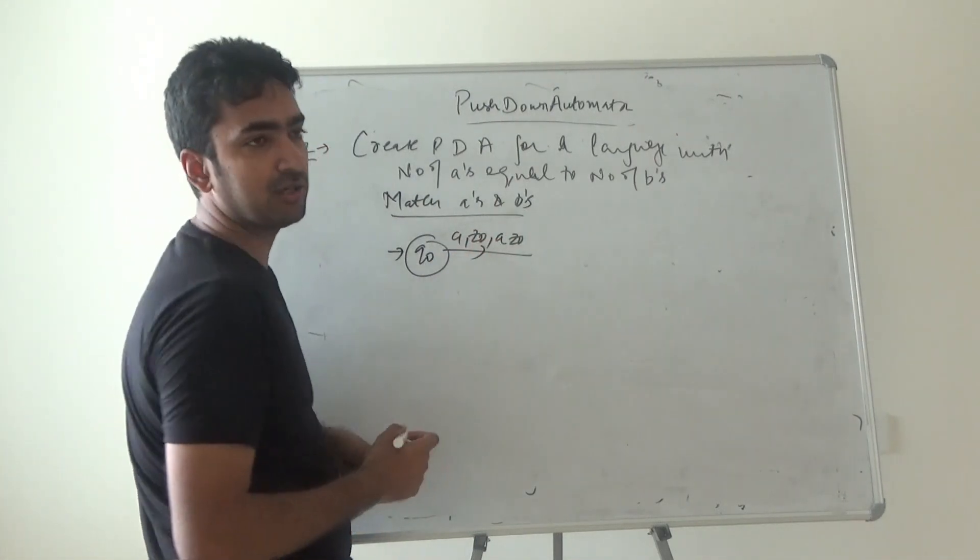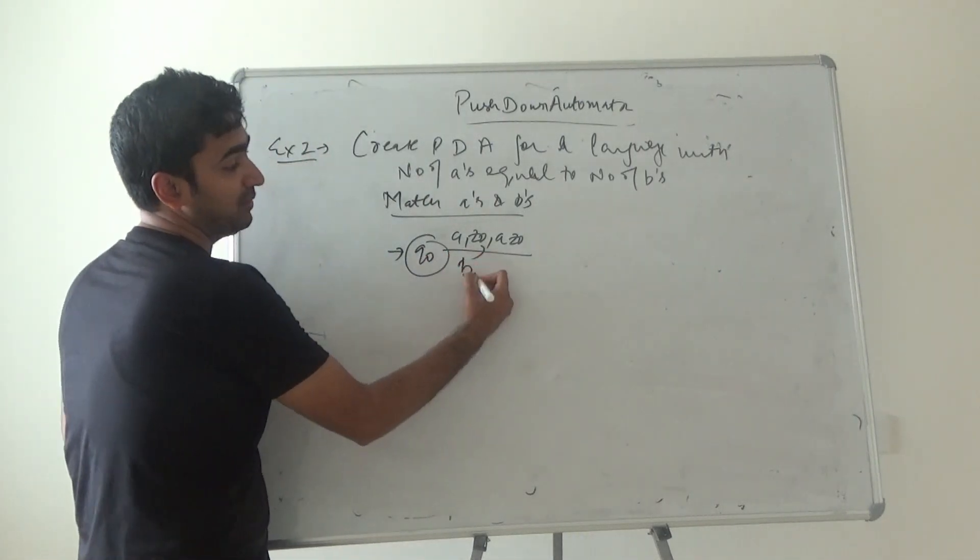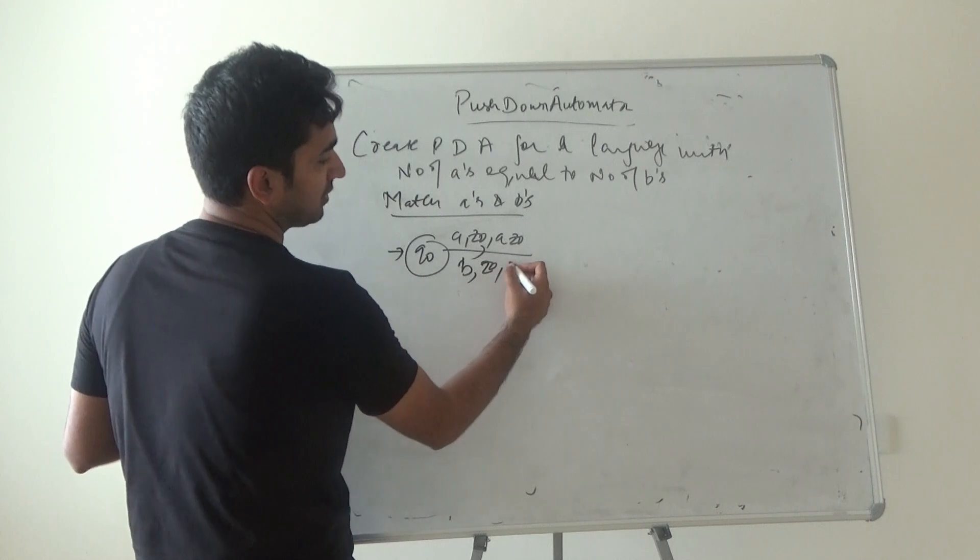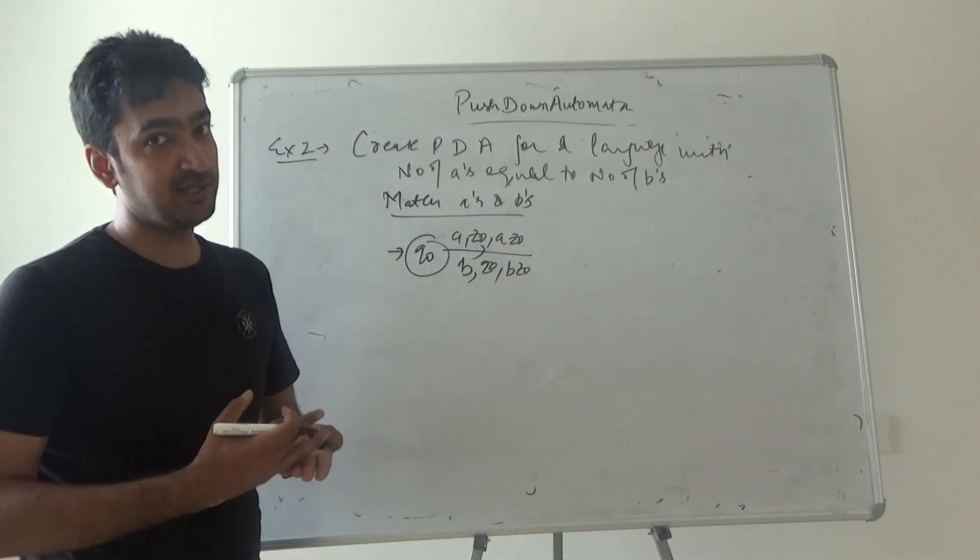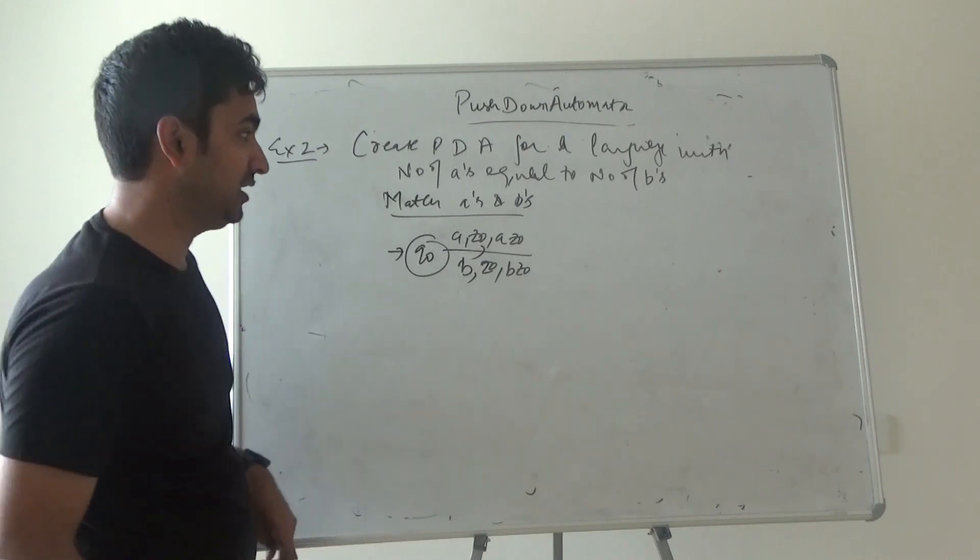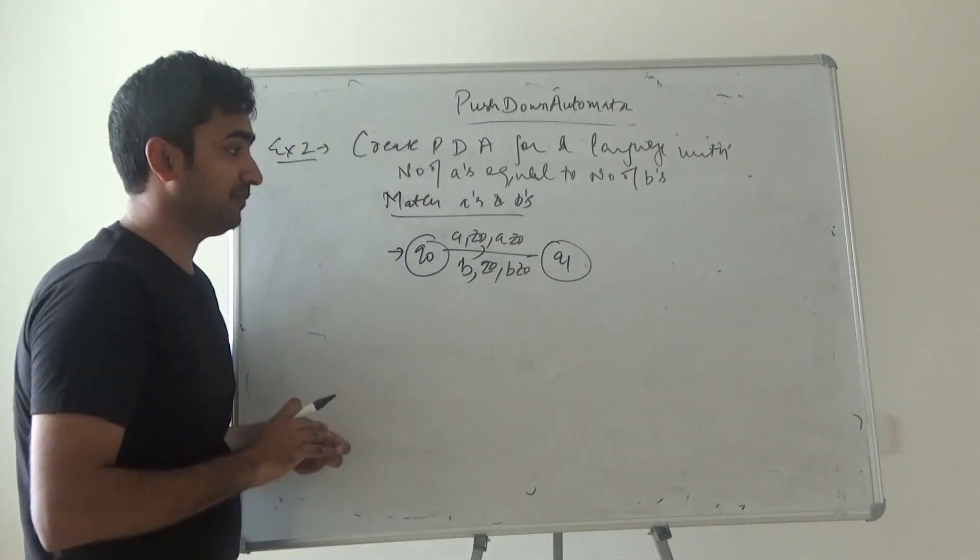And q0, when b comes, (b, z0) comes and it can be z0 also. So we can start with a and b - it has no constraint. Then we have q1.